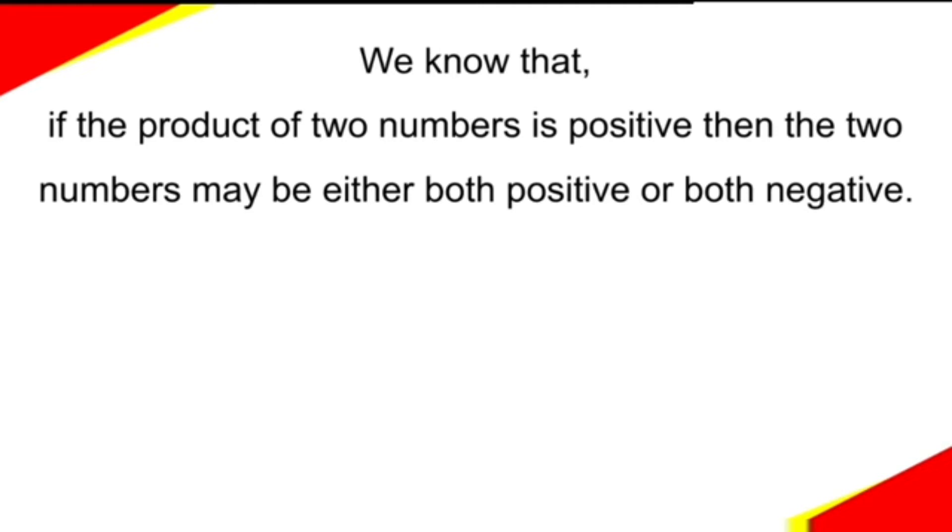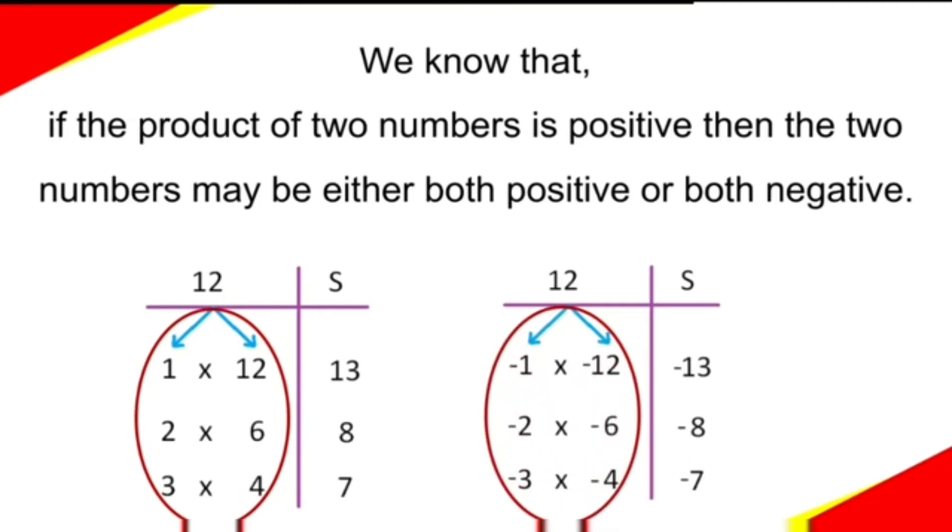So let us take the factors of 12 with both positive sign or with both negative sign. And also, we need the sum of the two numbers as +7. So let us add each pair of these numbers.